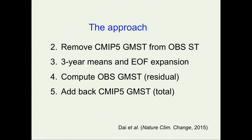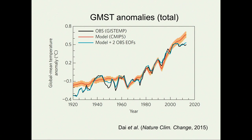The next step is to compute, from these grids, the reconstructed observed global mean surface temperature. I'll refer to this as the residual — we think of it as being due only to internal variability, not forced response. We can then add back the original CMIP-5 global mean surface temperature to get the total. The blue curve, which goes along with the black observed curve, is what one obtains using this procedure retaining just two observed EOFs, and the agreement is excellent.